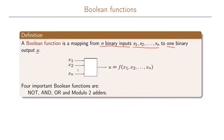We can write this as a box which is our boolean function. It will take input from n different variables, and then the output will be u, which is a function of the n input variables. There are many different boolean functions and we're going to look at a few in specific.